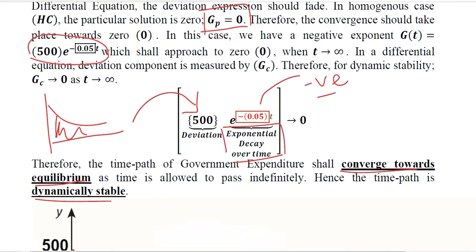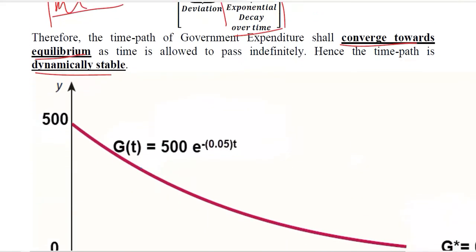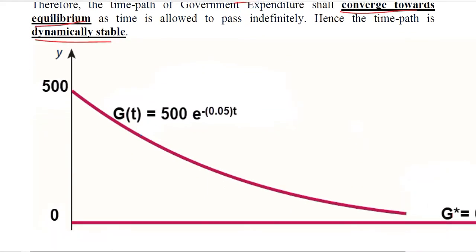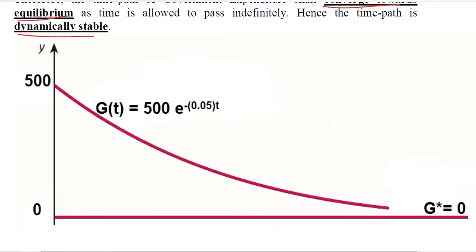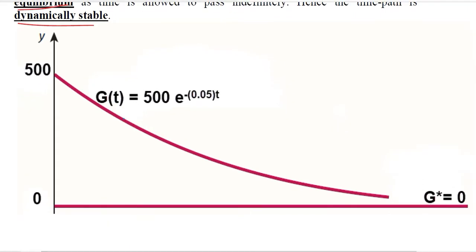We should also consider this in the form of a diagram. Here the diagram clearly shows that we are having dynamic stability because this is the equilibrium.